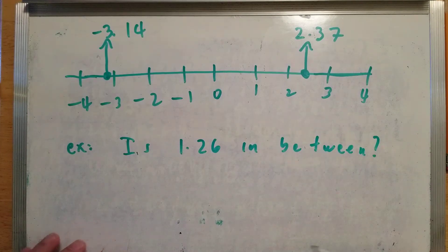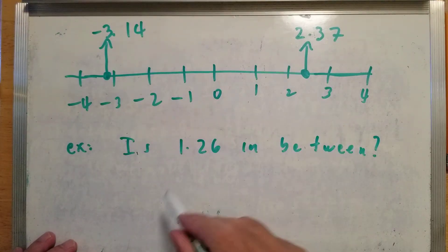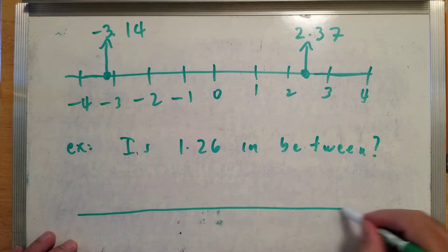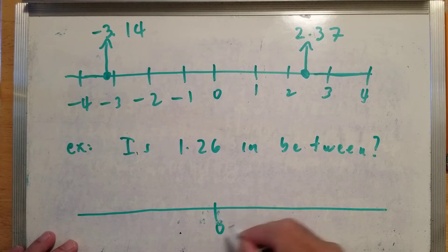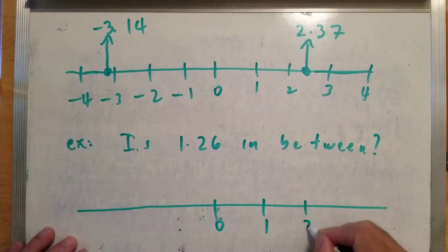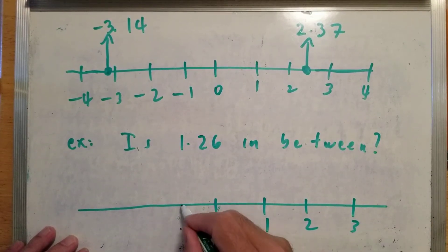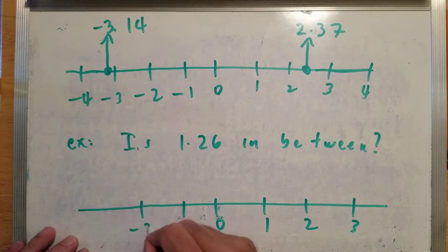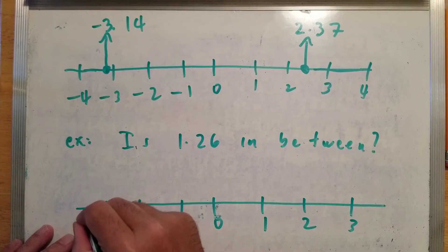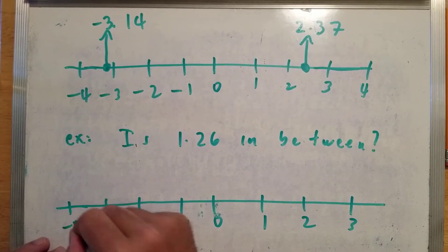Well, to answer this question, I'm going to reproduce that number line that we started out with and place 1.26 on it and see where 1.26 is. Three, here's negative one, negative two, negative three, negative four.